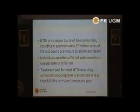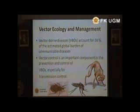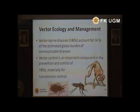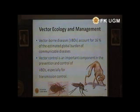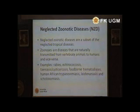The government budget allocation for treatment is very low — less than 50 cents US dollar per person per year, which is very small compared to other more prominent diseases. Another problem is that neglected tropical diseases are closely related to ecology and vector management. Almost 60% of these diseases are vector-borne, so vector control is the best approach in developing countries.